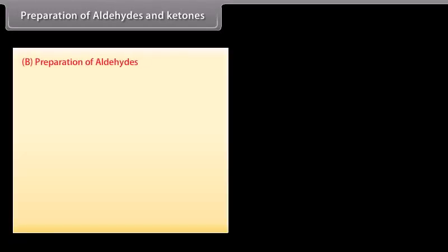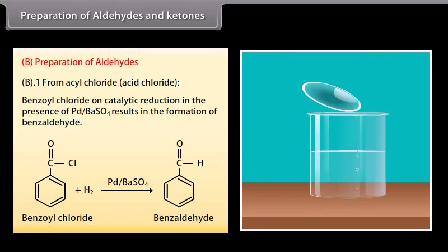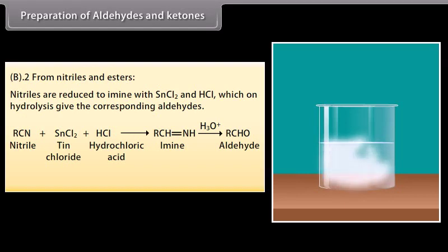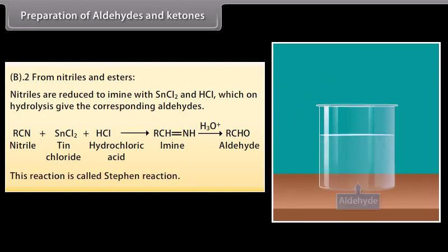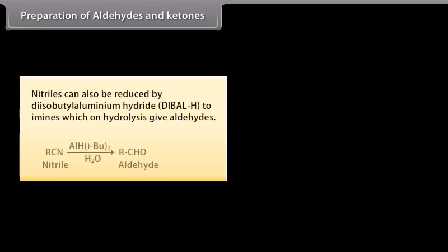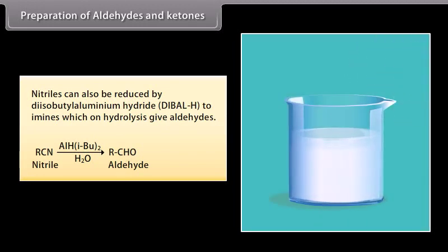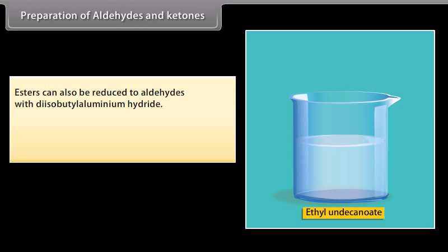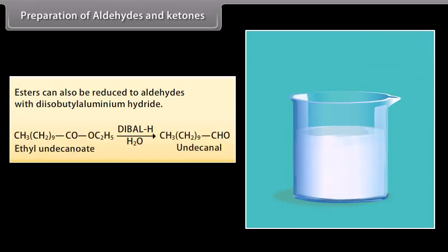Preparation of aldehydes from acyl chlorides: benzoyl chloride on catalytic reduction in the presence of palladium on barium sulfate results in the formation of benzaldehyde. From nitriles and esters: nitriles are reduced to imines with tin chloride and hydrochloric acid, which on hydrolysis give the corresponding aldehydes — this reaction is called the Stephen reaction. Nitriles can also be reduced by diisobutylaluminium hydride to imines which on hydrolysis give aldehydes. Esters can also be reduced to aldehydes with diisobutylaluminium hydride.